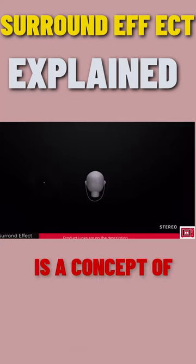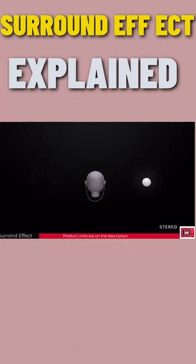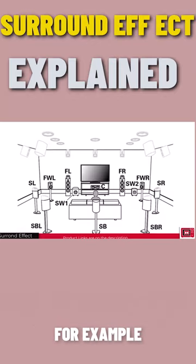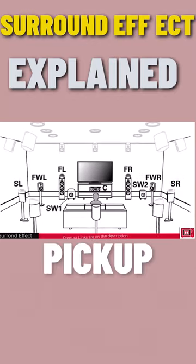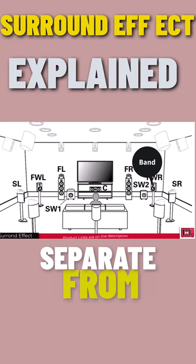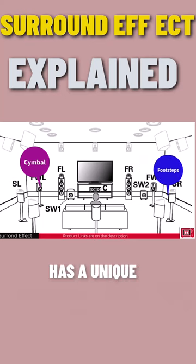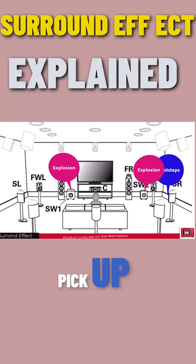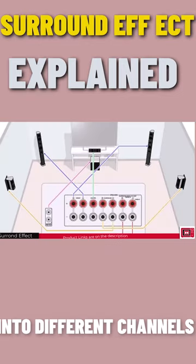Surround effect is a concept of splitting sound into channels. When you're listening to a home theater, for example, you'll notice that each speaker can pick up a particular sound or instrumental, separate from the other speakers. And each speaker has a unique sound they pick up. This is because the home theater splits the sound into different channels.